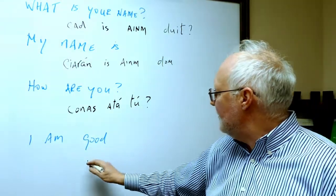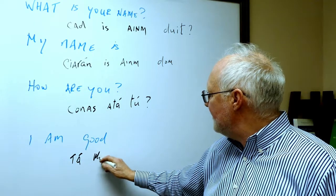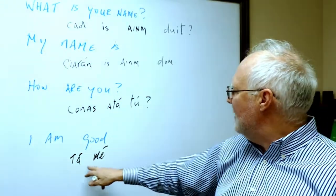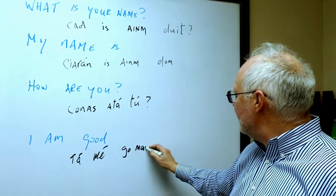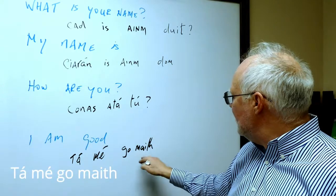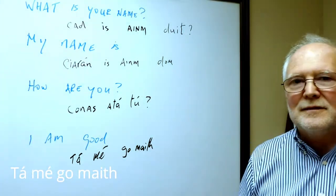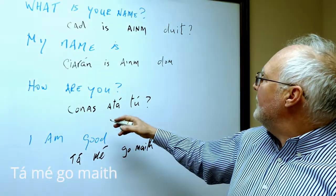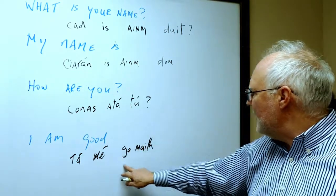And of course the answer is, again, coming from a ta. Ta is the verb. And this time it's me. This is asking you, but I'm going to answer with me. Ta me. And I'm going to say good for a start, but we can change that. Ta me. We know ma is good. I am Ta me ga ma. Ga ma is a phrase that says good. I am good. So the question is Konos a ta tu? And the answer is Ta me ga ma.